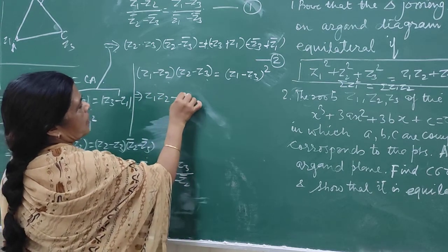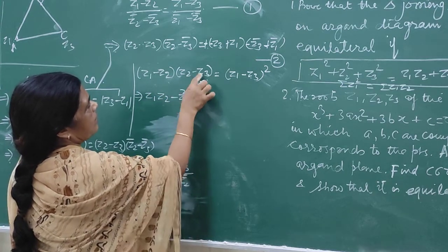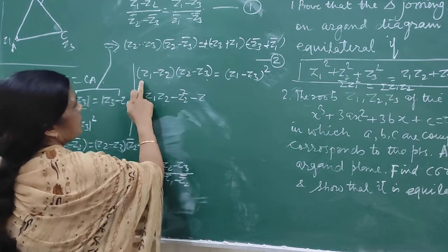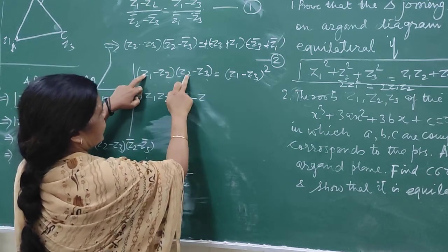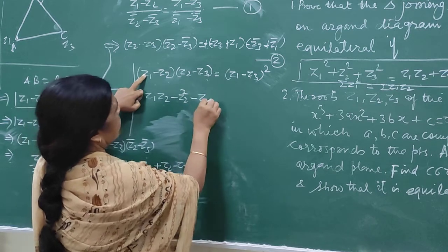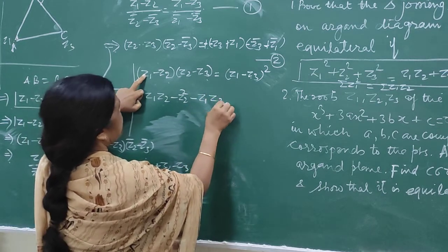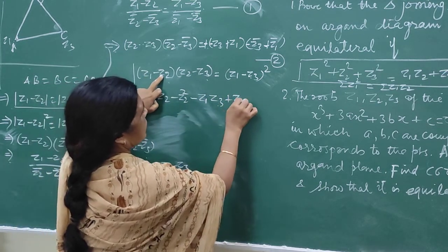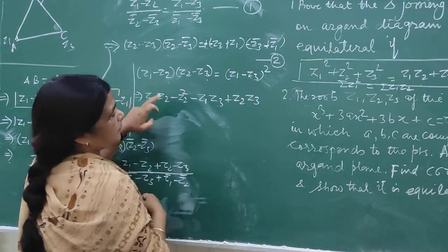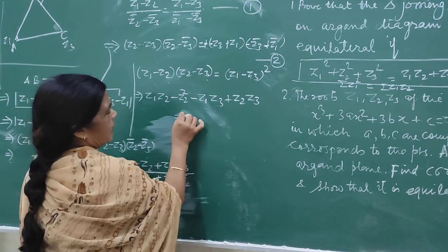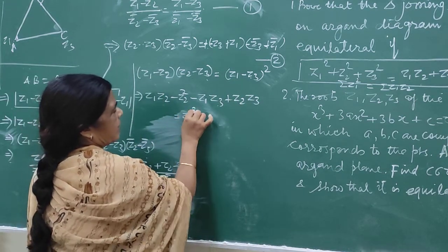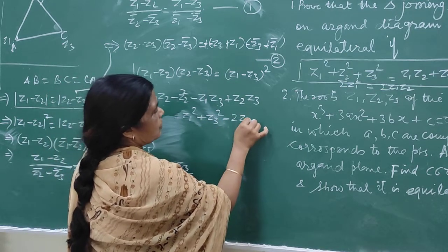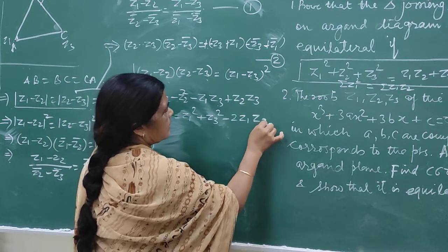On simplifying, the left side gives: Z1·Z2 minus Z2² plus Z1·Z2 minus Z2² minus Z1·Z3 plus Z2·Z3. The right-hand side gives: Z1² plus Z3² minus 2·Z1·Z2.